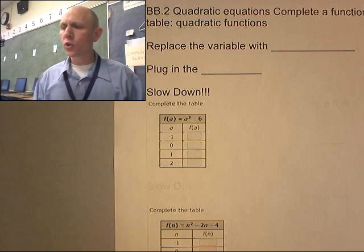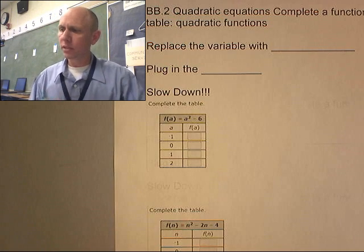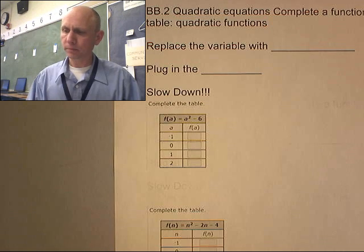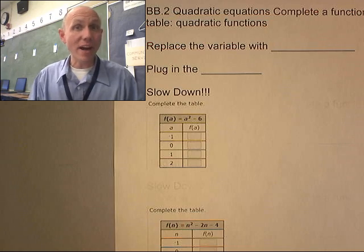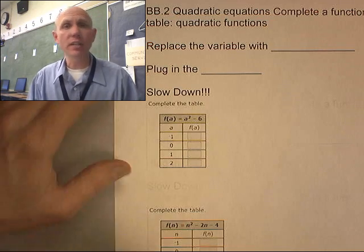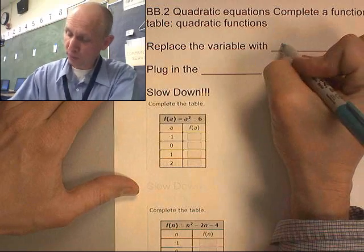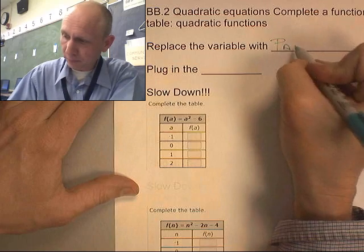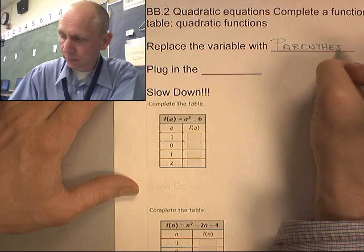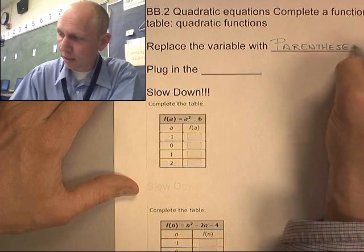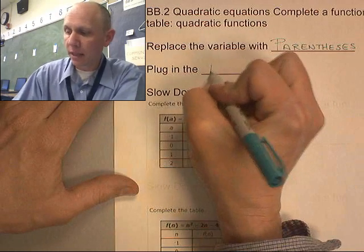We are going to do quadratic equations — complete a function table. Here's how this works. Quadratics make parabolas and they have an x-squared component to them. They are second degree. Our method here is to replace the variable with parentheses, and then we're going to plug in the numbers.